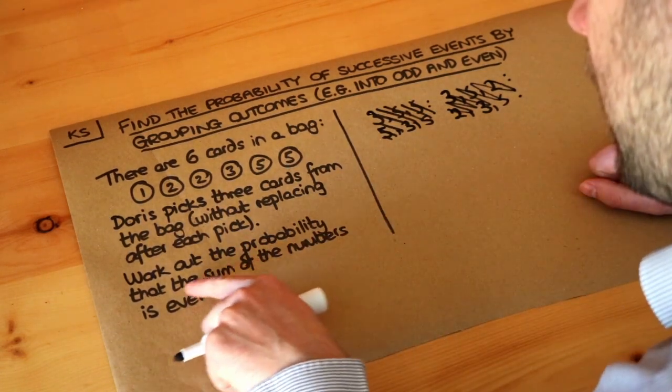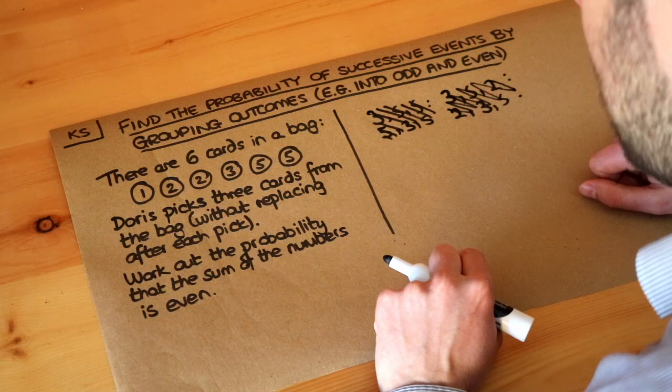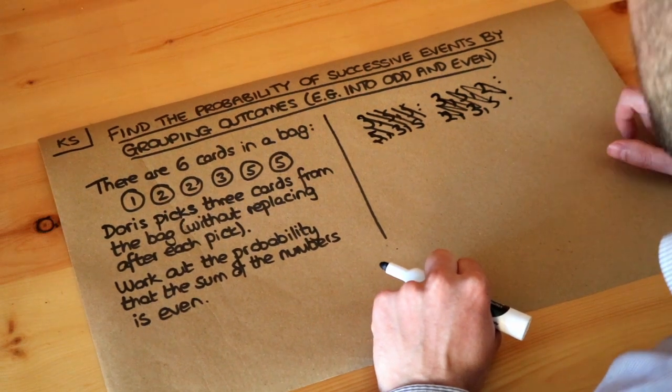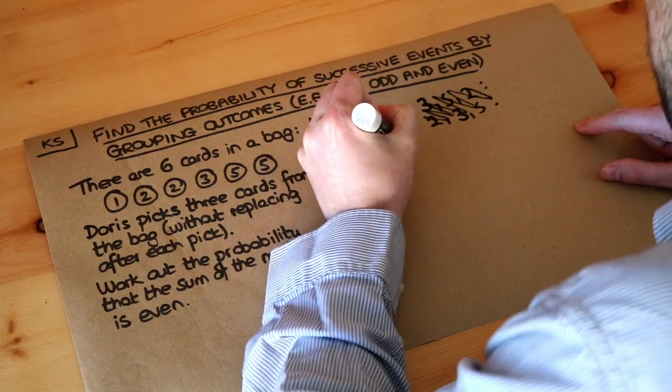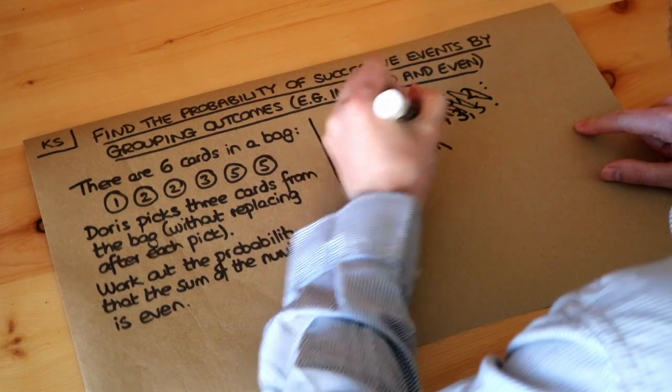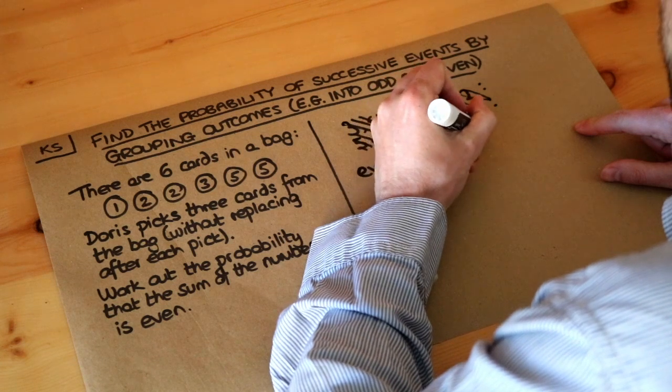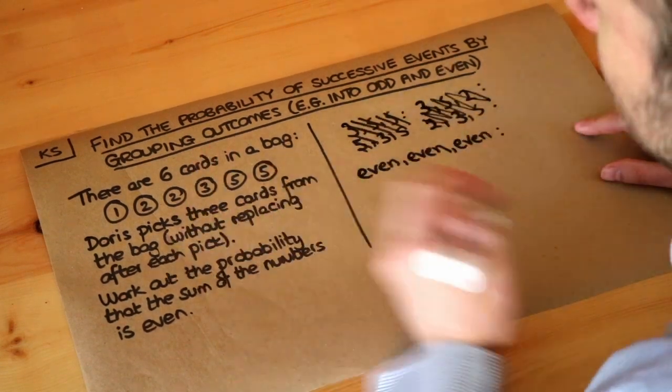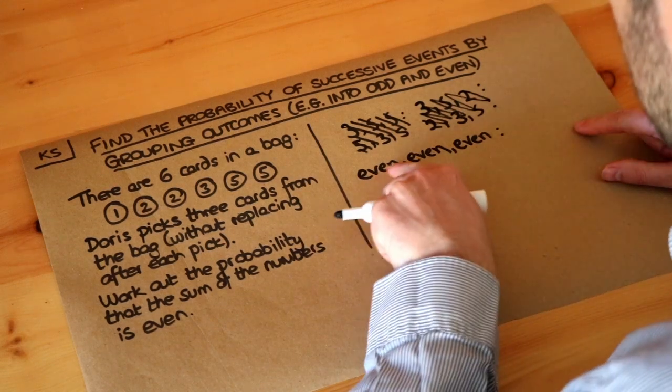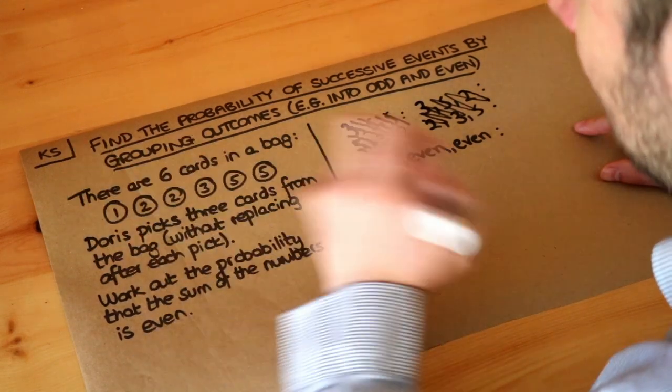So let's think, if the sum of the numbers is even, how could three numbers add to give an even number? Well, it could be even, even, even, because if you have three even cards, even plus even plus even would be even. And we can work out what the probability of the first card being even fairly easily.